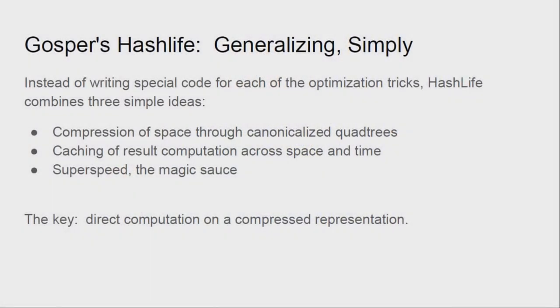Gosper's hash life is fantastic. It's a very simple algorithm that generalizes the type of optimizations we normally perform when trying to make a life algorithm fast. I'm going to cover the three main things it does. It compresses space using canonicalized quadtrees. It caches the results. And finally, their super speed. And that's the punchline for this talk. The key here is direct computation on a compressed representation.